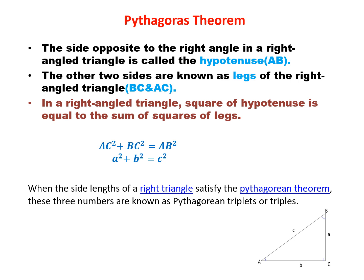When the side lengths of the right triangle satisfy the Pythagorean theorem, then these three numbers which are satisfying the relation are known as Pythagorean triplets or triples.